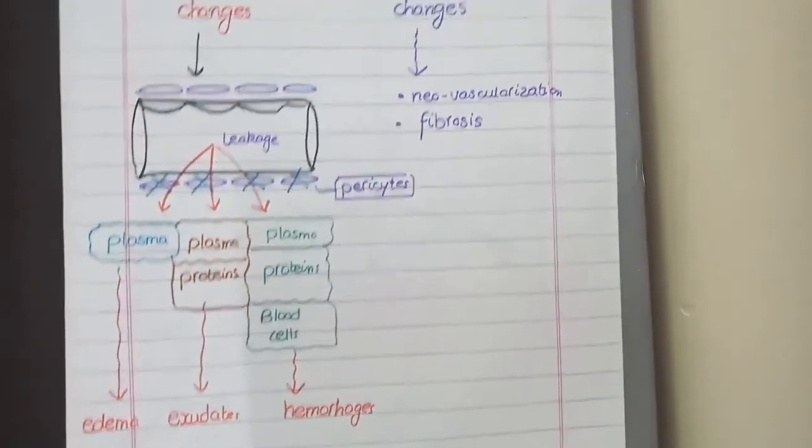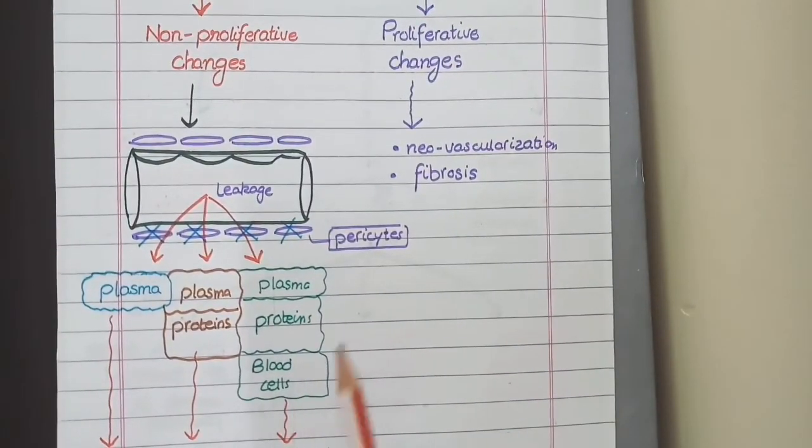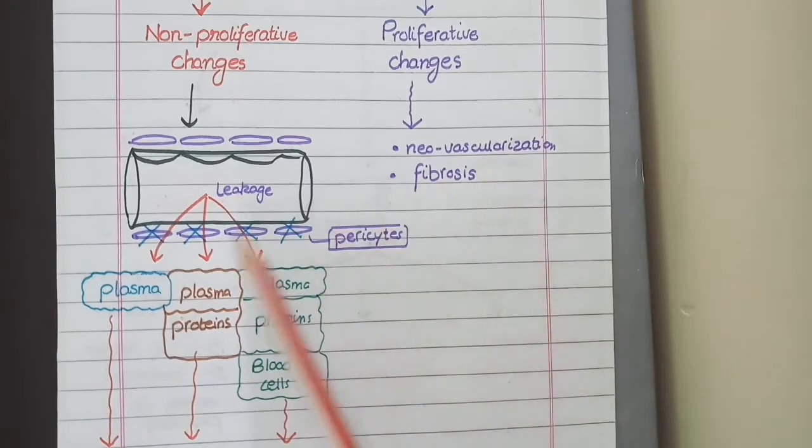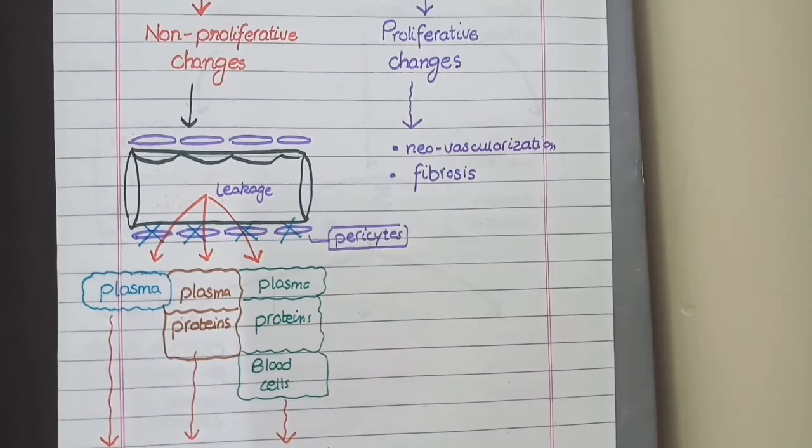Now let's see proliferative changes in which the main feature is formation of new vessels that we call as neovascularization. As these new vessels are fragile, they rapidly undergo hemorrhage, and this hemorrhage resolves into fibrous tissue which is known as fibrosis. So in proliferative changes, you see neovascularization and fibrosis.